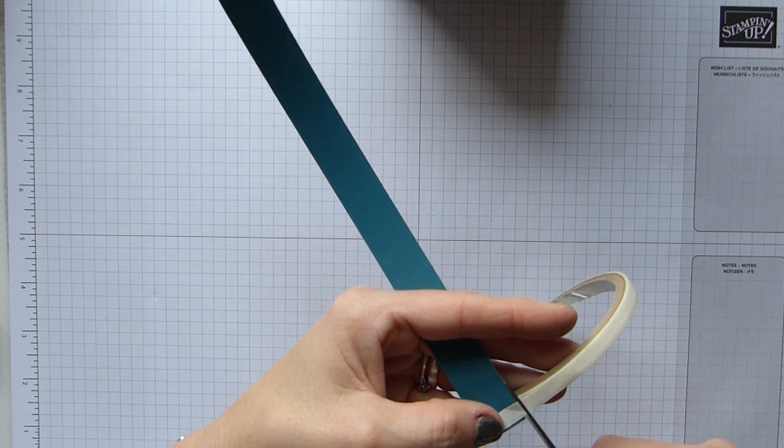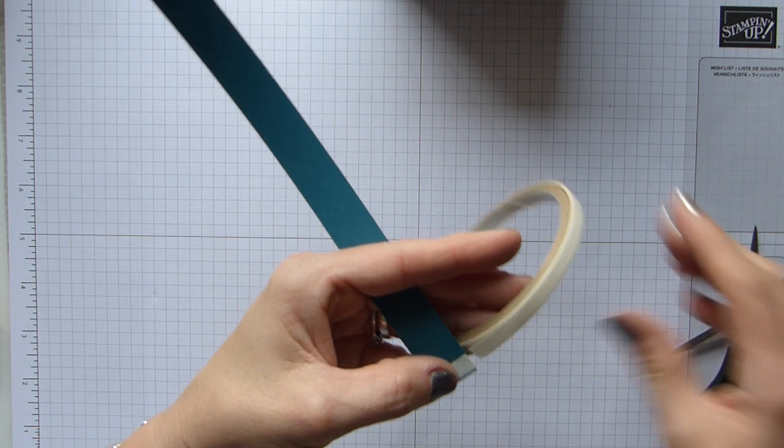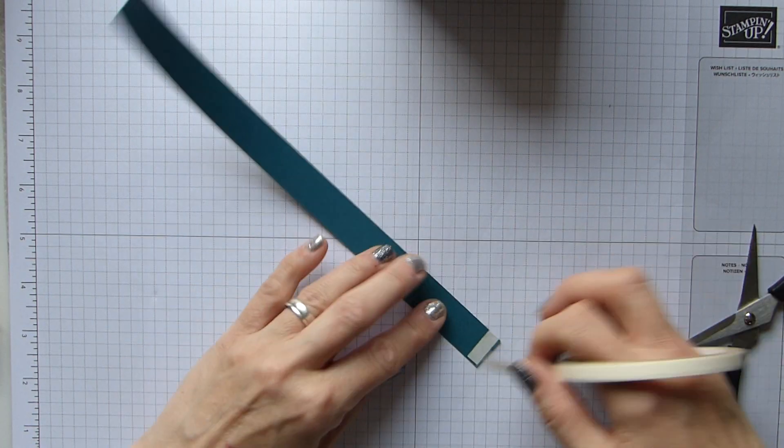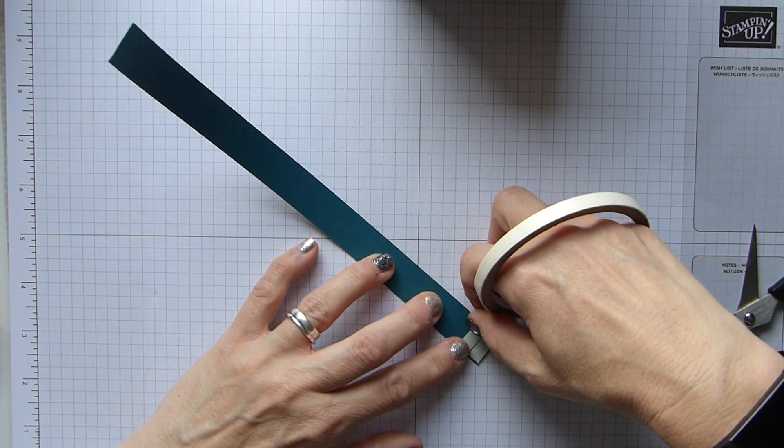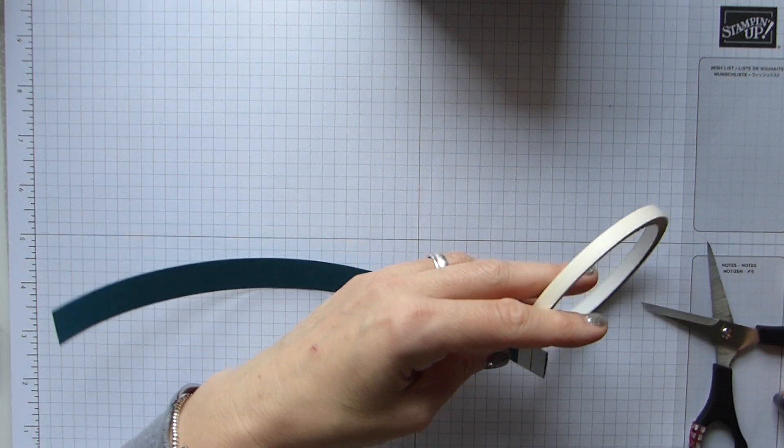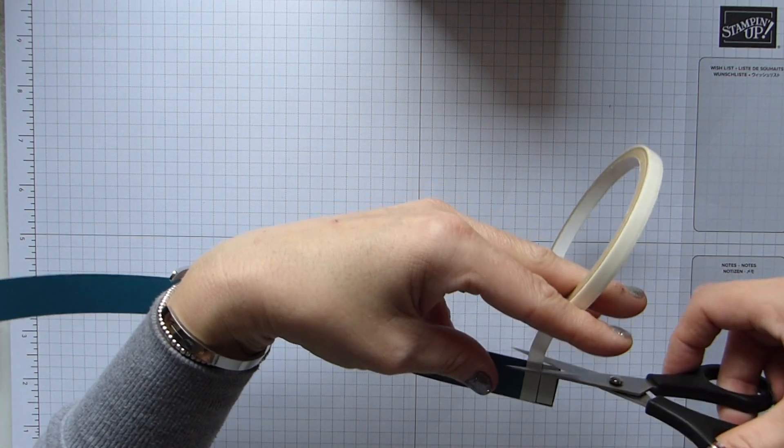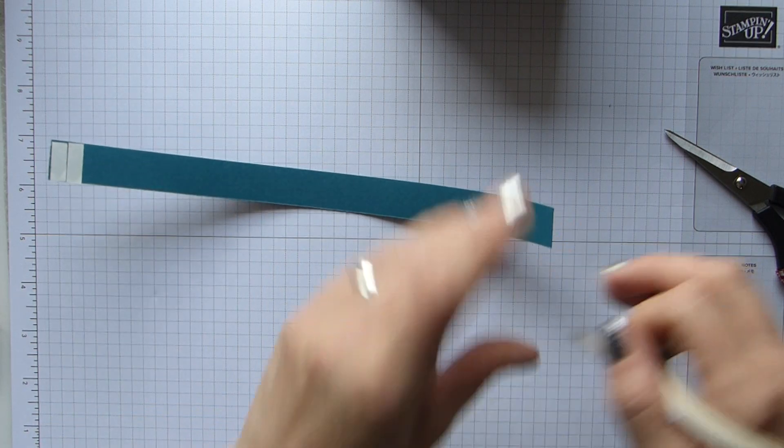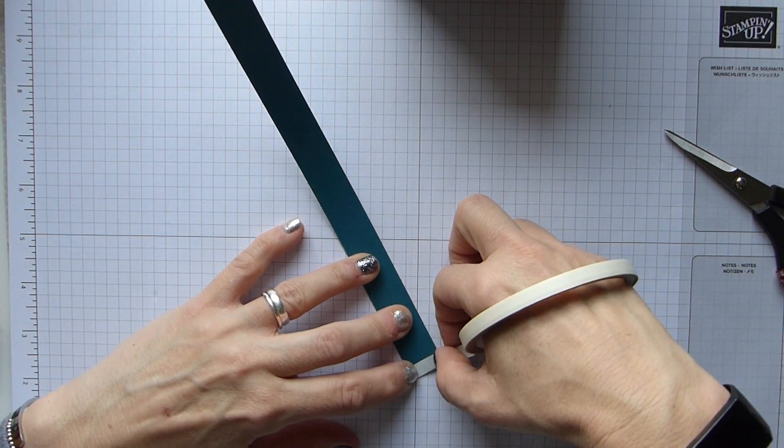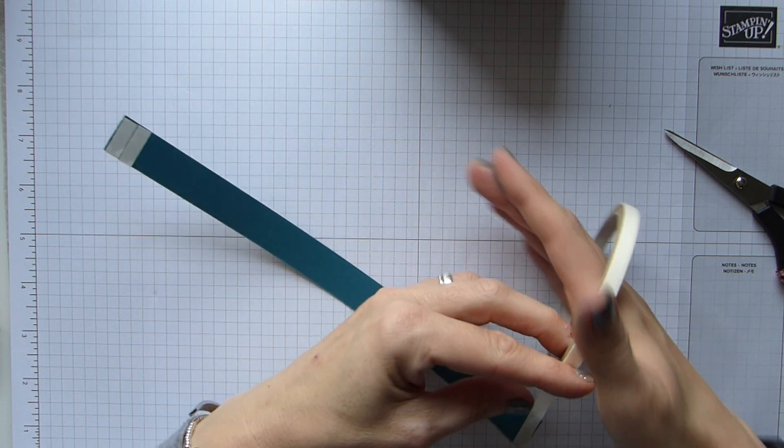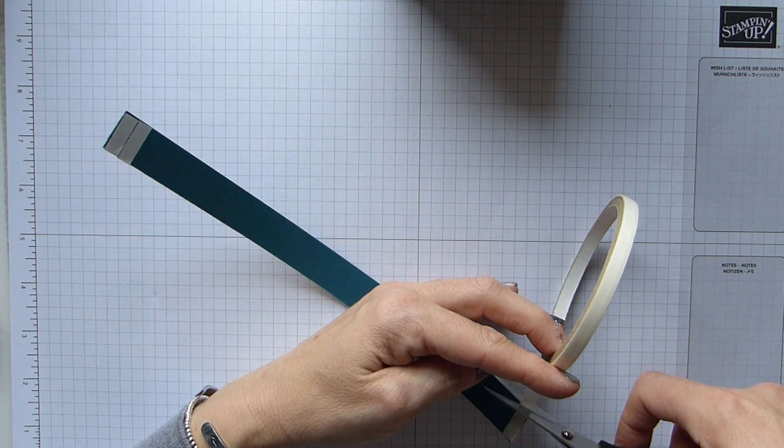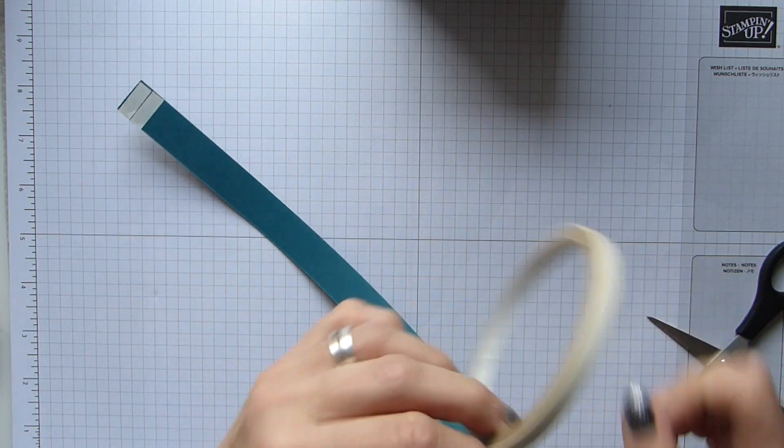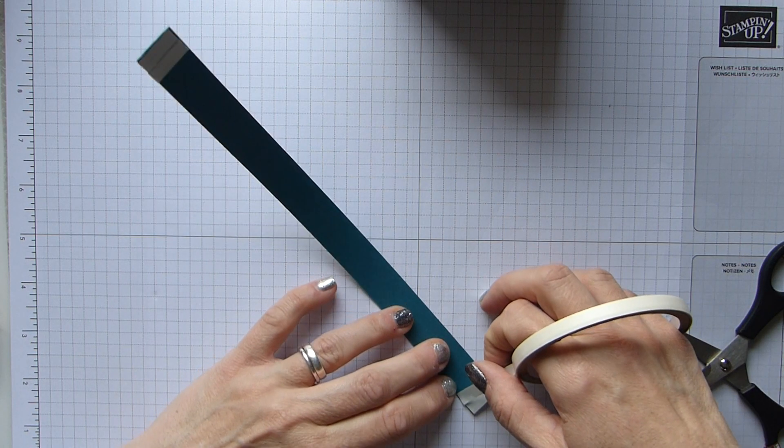So for your handle, I have a strip of cardstock that is 10 and a half by three-quarters of an inch, so that's 27 by 2 centimeters. And then my DSP is 10 and a half by half, which is 27 by one and a half centimeters. Run my snail all the way down, and then it's the same length, so as long as you've got it straight at the bottom and equal, it will all fit nicely.